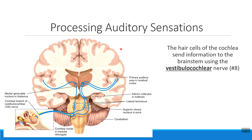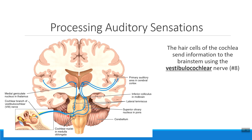One final thing to know about the process of hearing is that it involves cranial nerve number eight, called the vestibulocochlear nerve. The vestibulocochlear nerve communicates with both parts of the internal ear. When talking about hearing, the cochlear part of that nerve collects the hearing information. That information goes back through cranial nerve number eight, through the thalamus, out to the temporal lobe where we have our primary auditory cortex, and then to the auditory association area to figure out exactly what it is that we're hearing.